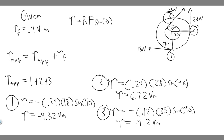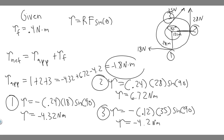The applied torque is all three added up: −4.32 + 6.72 + (−4.2) = −1.8 Nm. The negative sign means the net applied torque is in the clockwise direction.